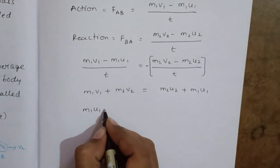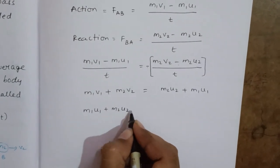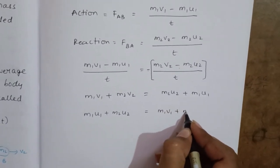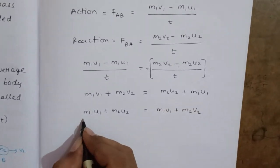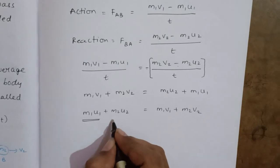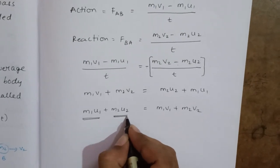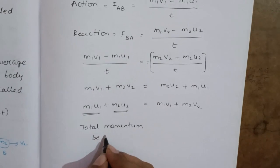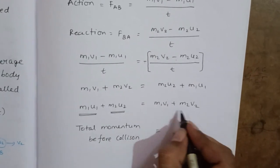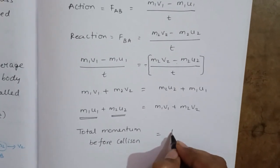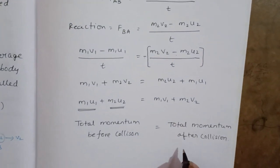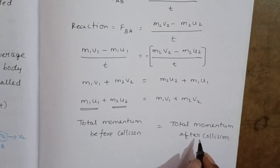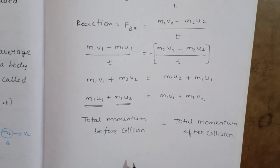After rearranging, we get: m1u1 plus m2u2 equals m1v1 plus m2v2. Here, m1u1 plus m2u2 is the total momentum before collision, and m1v1 plus m2v2 is the total momentum after collision. This proves that total momentum before collision equals total momentum after collision.